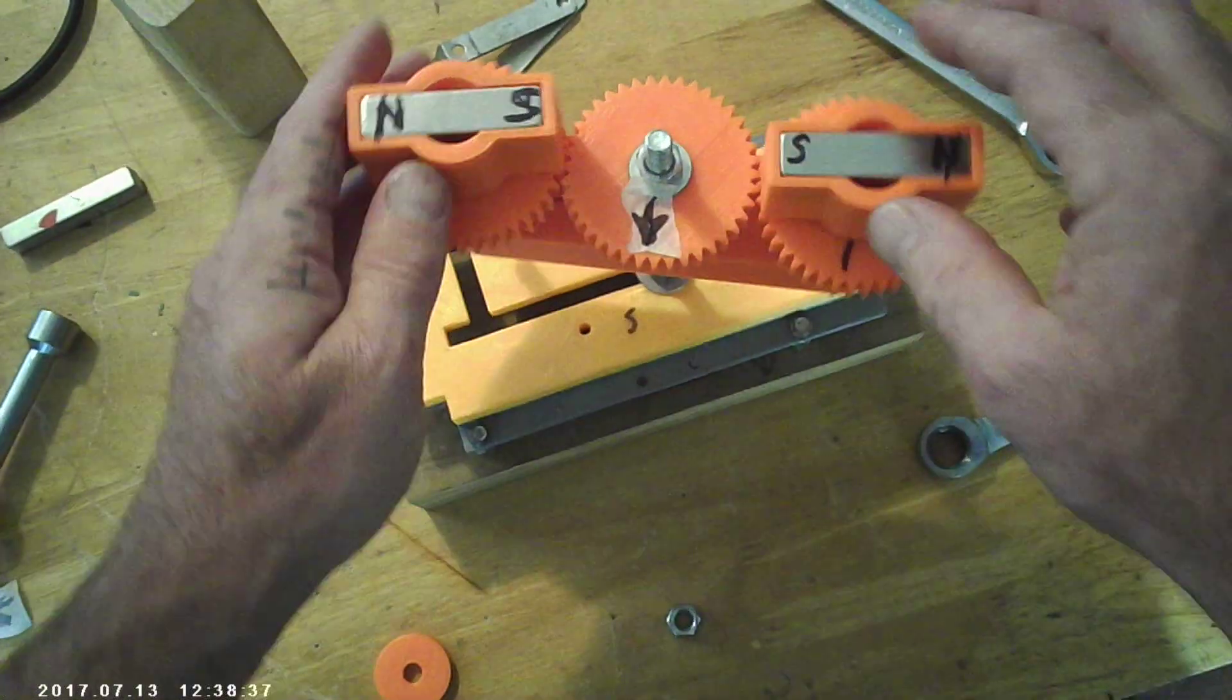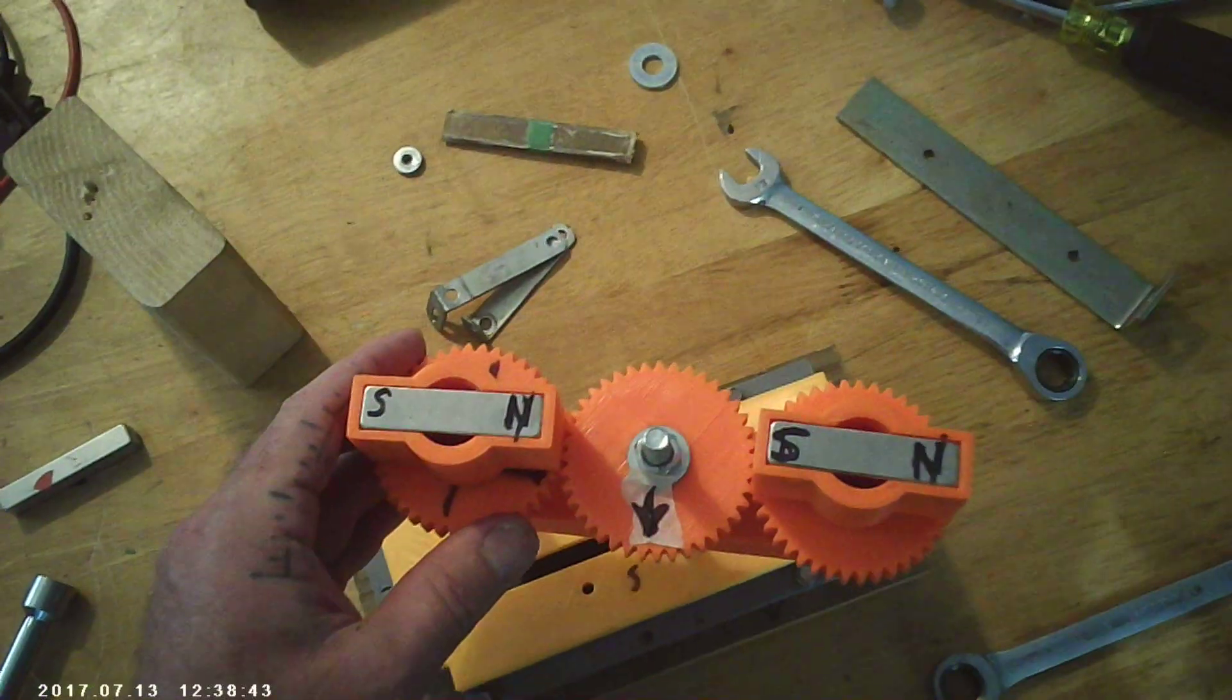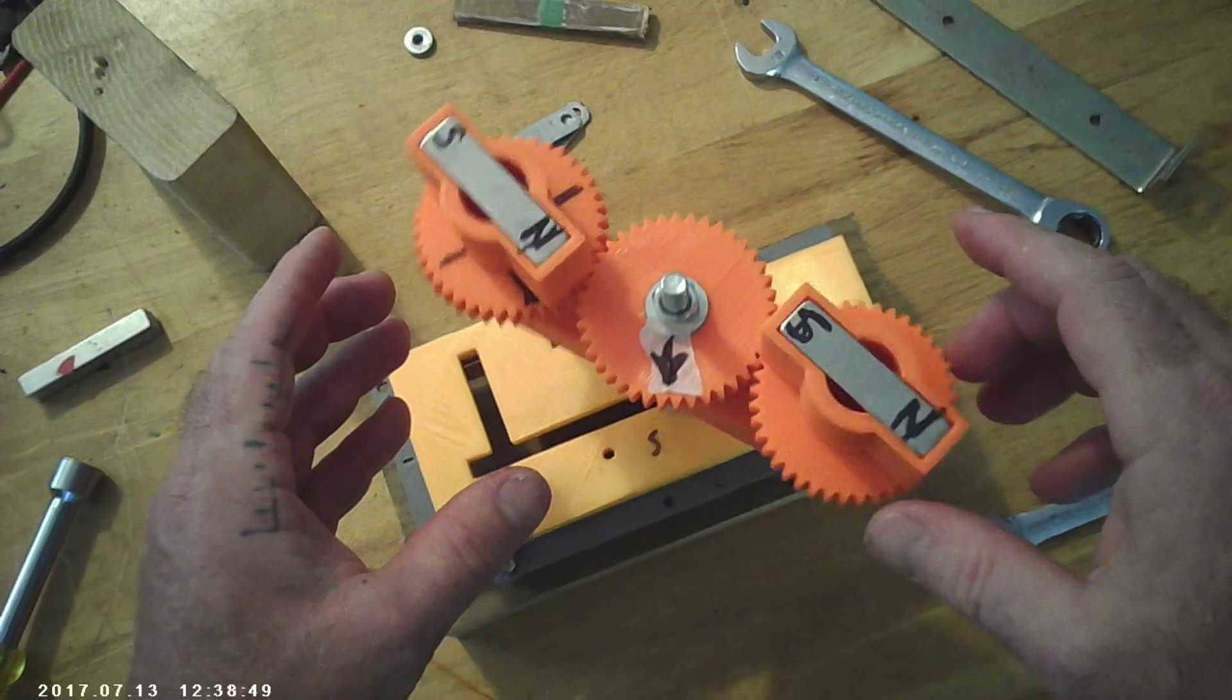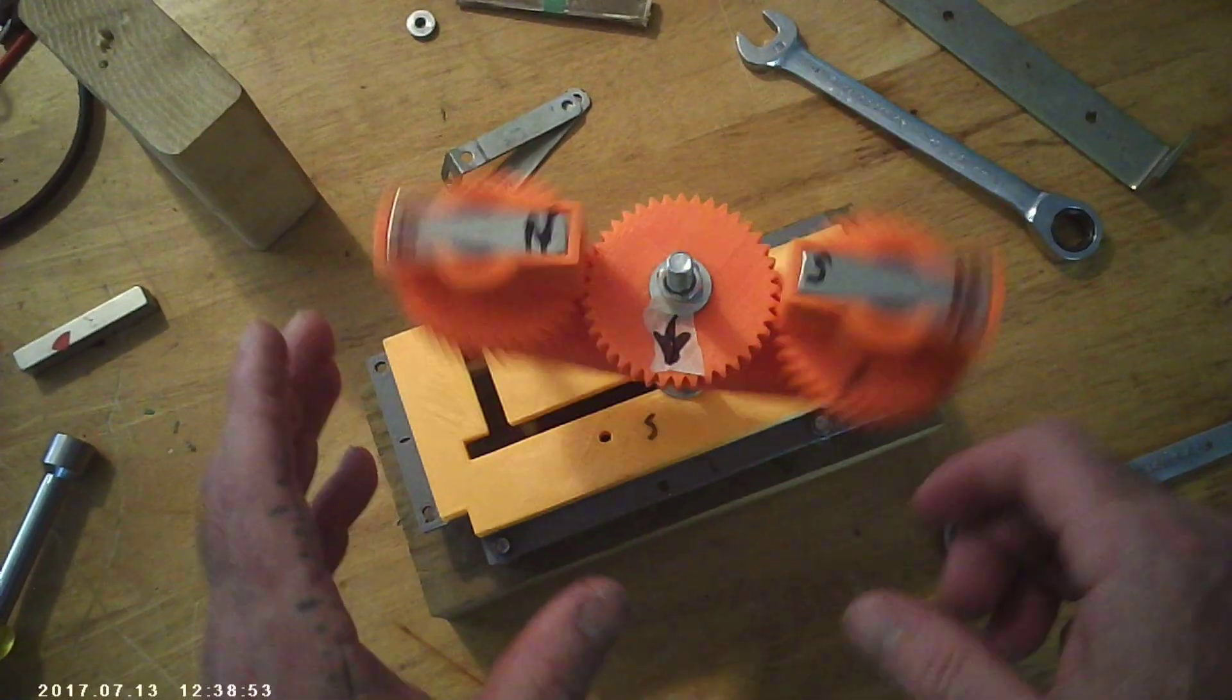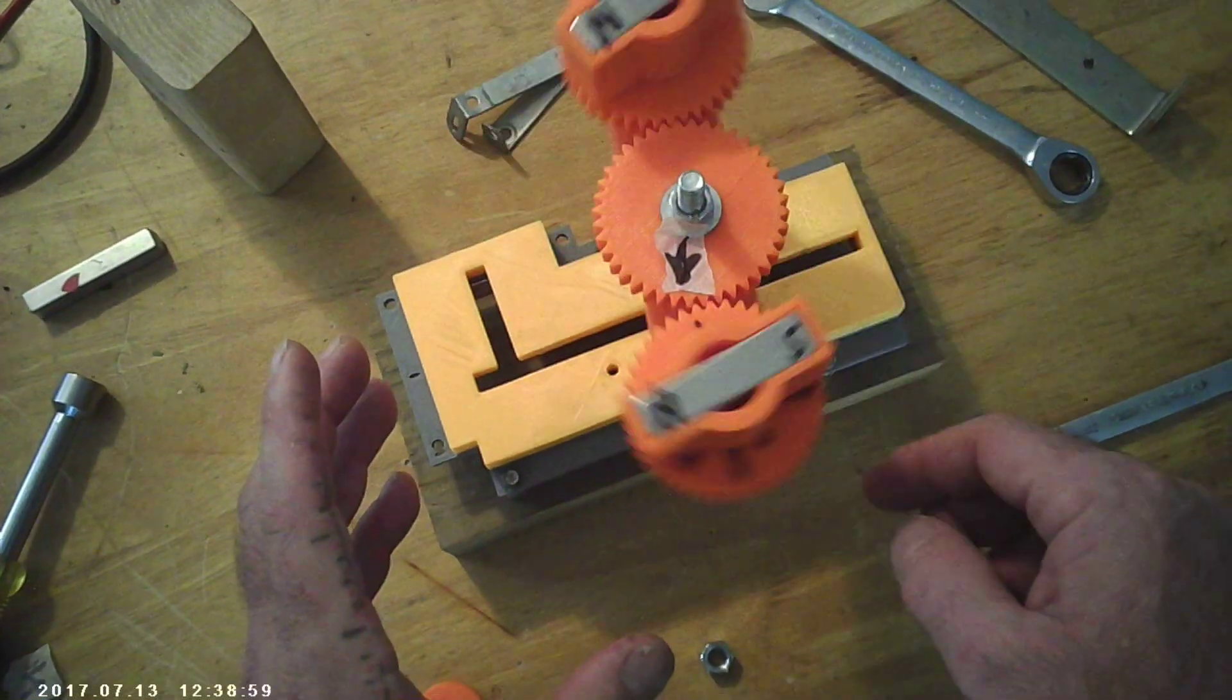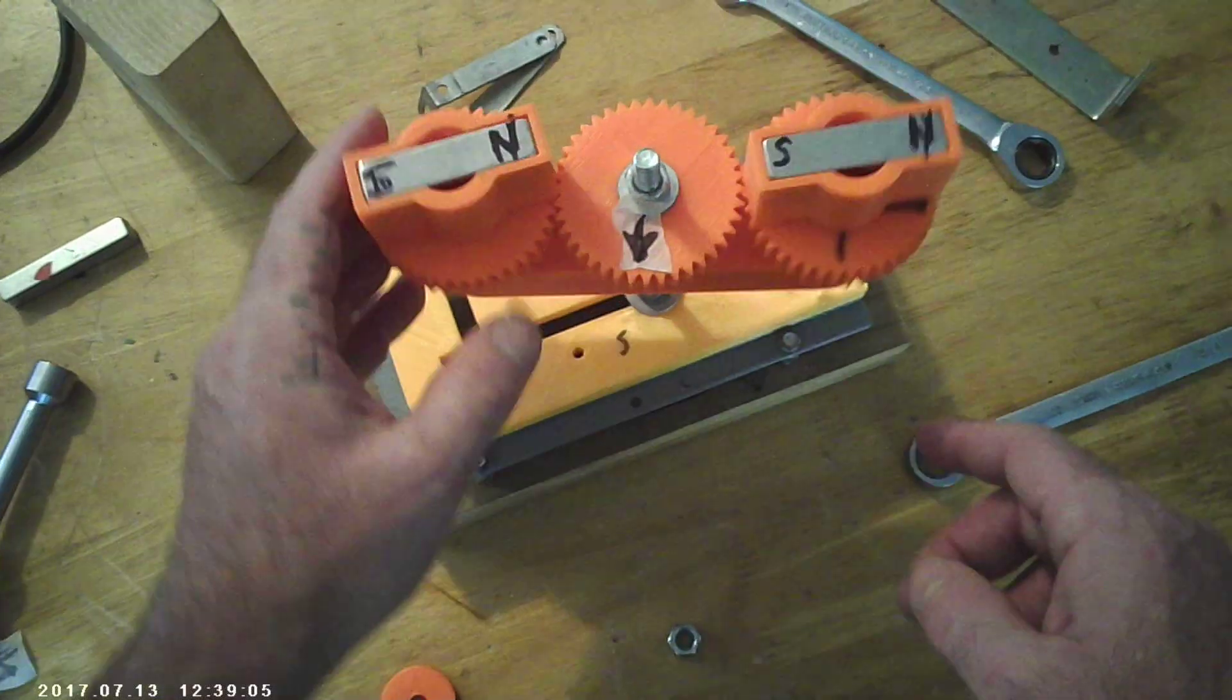Now we're gonna flip this one so south is aligned with north. There you go, they're attracted. So when I do this, they're attracted in and they won't get past, so half and half again like usual, balanced.